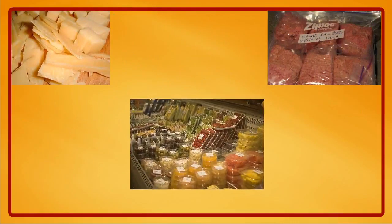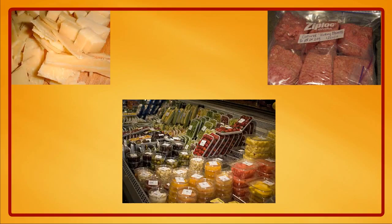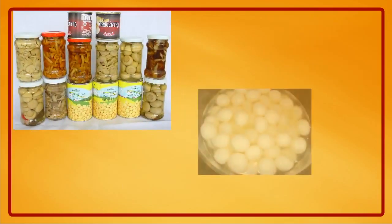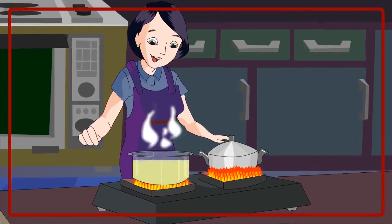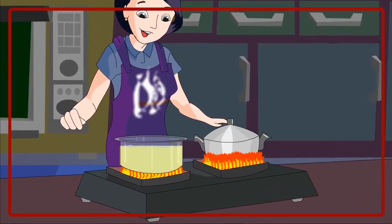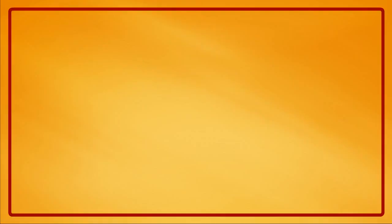Cheese, meat and cooked vegetables are wrapped in polythene packaging with no air in it. Canned fruits and rasgullas are stored by heating the food, removing air and then sealing the can immediately. Boiling kills the germs that spoil the food.